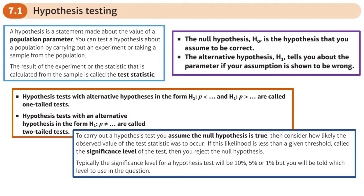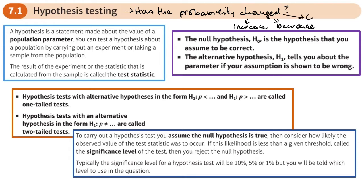In this chapter we're going to be looking at probability. When we do a hypothesis test, we're trying to answer the question: has the probability changed? That change may be an increase, it may be a decrease, or it may just be a change in some way. The probability of some event — this probability that we're seeing if it's changed — is what we call a population parameter. There are lots of different population parameters like the mean, but in our case our population parameter is going to be the probability.